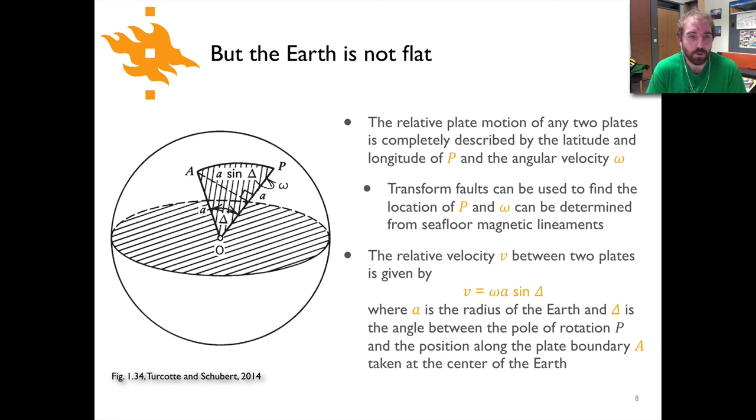Now here's where things get slightly more complicated. If we are sitting at some point on the surface of the earth and we know the position of a pole of rotation, and we want to say okay what is the relative velocity between the two plates v, we can calculate the relative velocity at some distance from the pole of rotation P using this relatively simple equation here. v is equal to omega, which is the angular velocity, times a, the radius of the earth, times the sine of this angle delta. Delta, if you can see it here in the figure, is the angle that goes from the center of the earth from point P, the pole of rotation, over to our position A where we are trying to calculate our relative velocity.